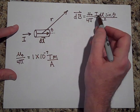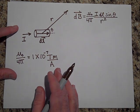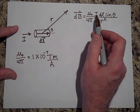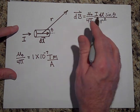So this looks a lot like QV sine of theta over R squared, except we're going to have the I times DL times the sine of theta over R squared. There's a cross product in here.